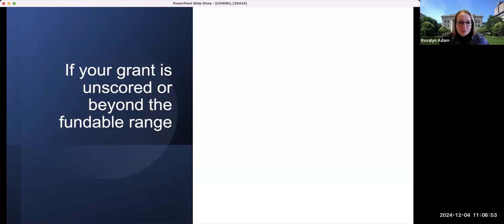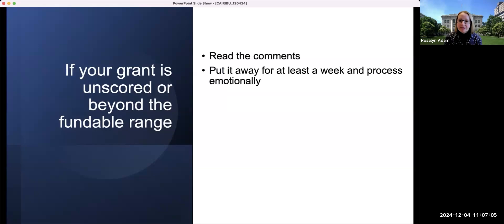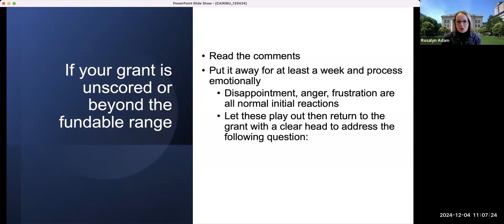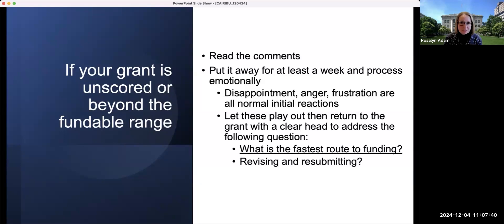So if your grant is unscored or beyond the fundable range, you're going to have to make some decisions. The first thing to do once you get your summary statement is to read the comments. And then put the summary statement away for at least a week and process it emotionally. Disappointment, anger, frustration, these are all normal initial reactions to comments that individuals receive from reviewers. So live with those emotions, let them play out, and then return to the grant with a clear head in the next few weeks to address the following question. What is the fastest route to funding? So is it indeed revising and resubmitting your original proposal? Or would submitting a new proposal be a more practical approach?